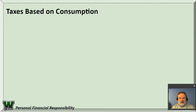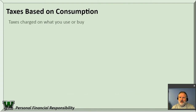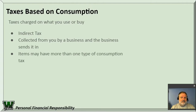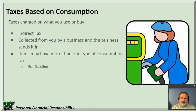Some taxes are based on consumption — these are taxes charged on what you use or what you buy. These are also indirect taxes. You don't write a check or do a Venmo to the government; when you purchase something, there's an extra fee added on. These are collected from you by a business, and the business sends it in. Some items may have more than one type of consumption tax — gasoline, for example, has many different types of taxes: state taxes, local taxes, and often a county road tax.